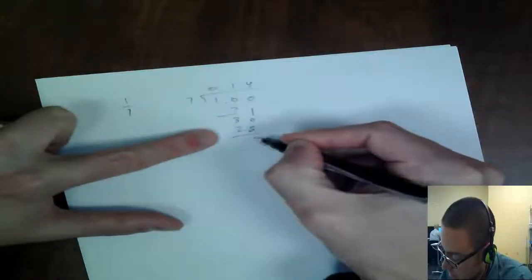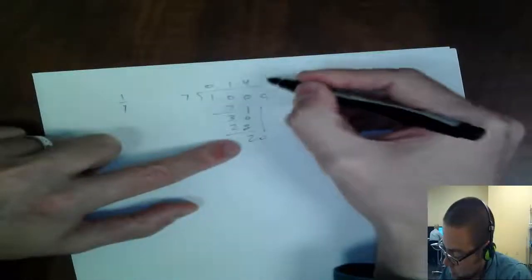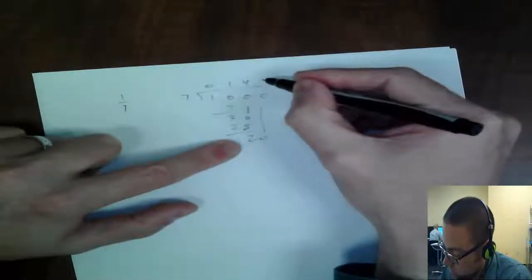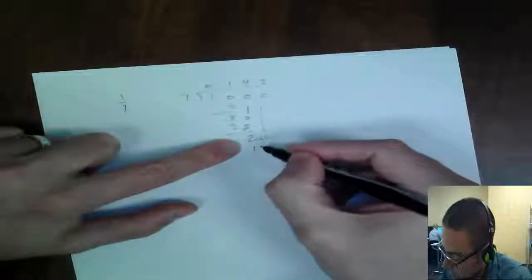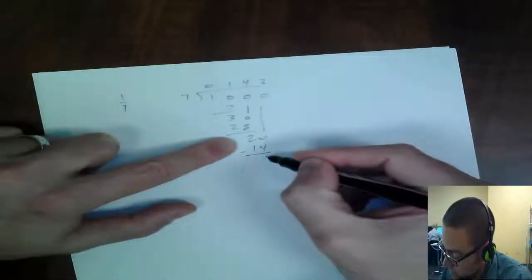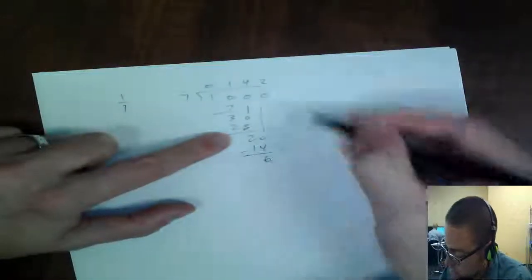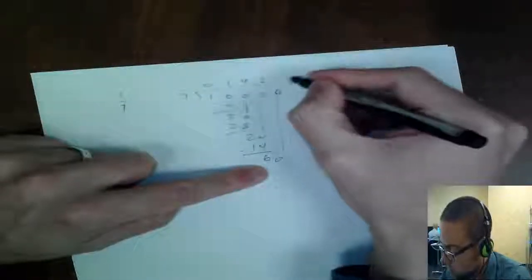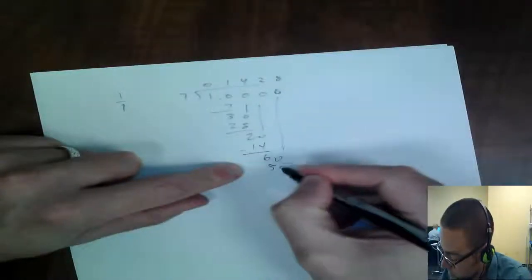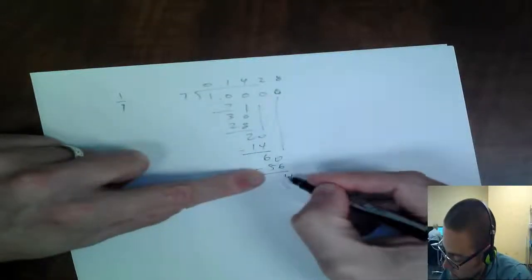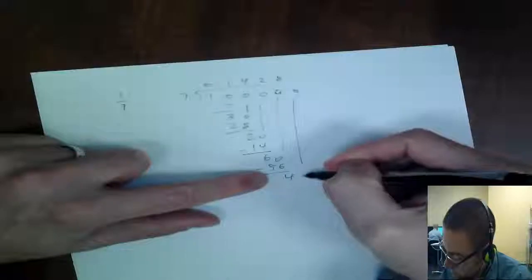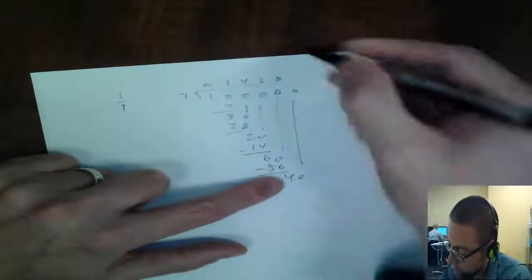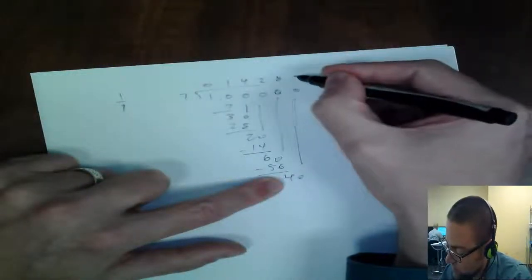7 goes into 30, 4 times, which is 28, which subtract, I get a 2, bring it down to 0. 7 goes into 20, not 3 times, it'd be 21, so it's 2, 14, subtract, I get a 6, bring it down to 0. 7 goes into 60, 8 times is 56, which is 4, bring it down to 0.